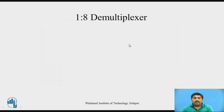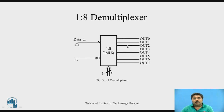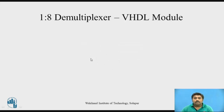Now let us go for the demultiplexer. We just studied the 8-to-1 multiplexer; now let us go for the 1-to-8 demultiplexer. This demultiplexer has 1 input and 8 outputs — the reverse of a multiplexer. In the multiplexer you have 8 inputs and 1 output; here you have 1 input and 8 outputs. The remaining working is the same, with 3 select lines, and additionally a clock signal referred to as G.